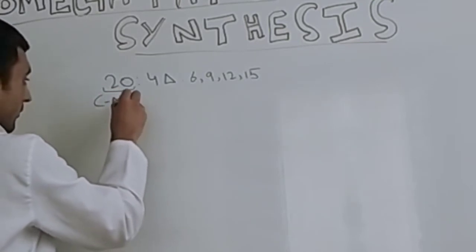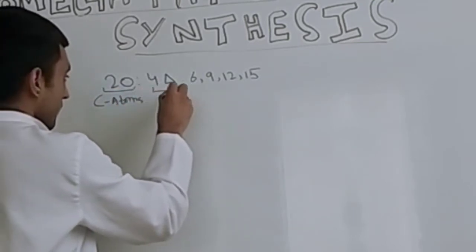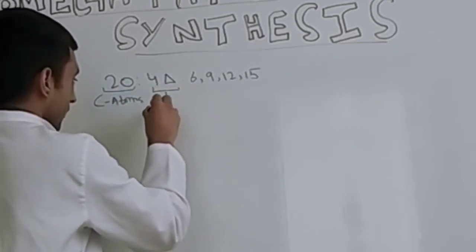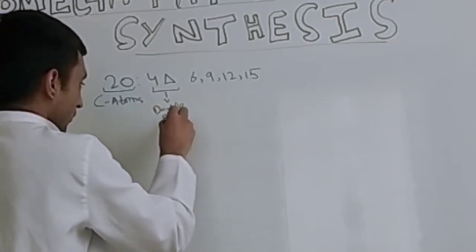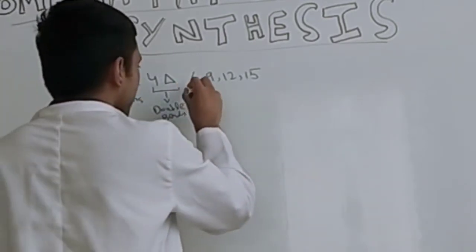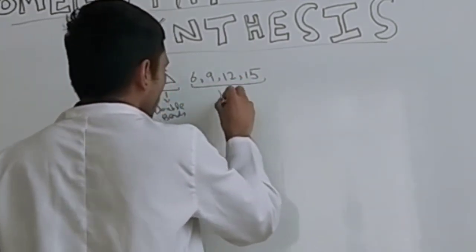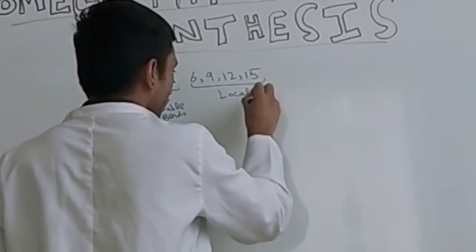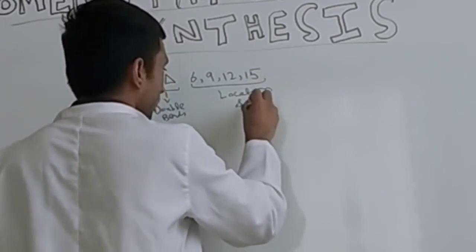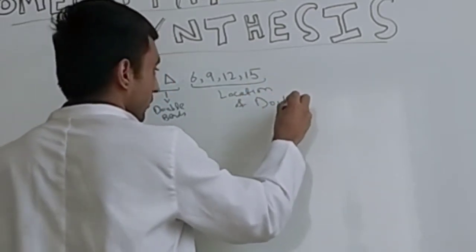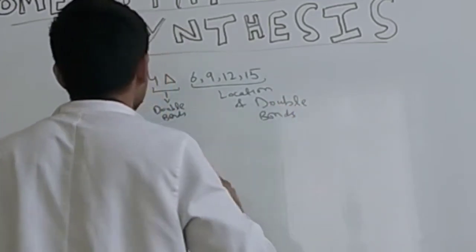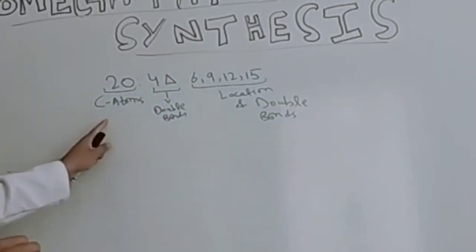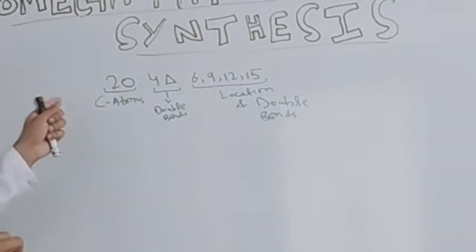So this digit denotes the number of carbon atoms, this digit denotes the double bonds, and these denote the location of the double bonds.